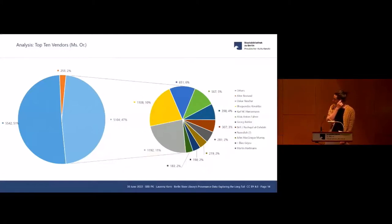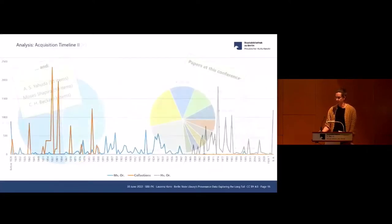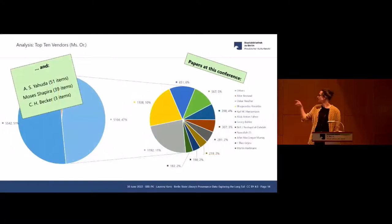For those who have worked with the holdings, it's not a surprise that Oscar Rescher is actually the top vendor within the Ms.or. manuscripts. Then we have individuals like Baguanders, Kevaldas, Hirsemann, Bühler, and Führer who dealt in South Asian manuscripts as far as I know mainly, and then again some individuals with Arabic, Ottoman, Persian manuscripts.